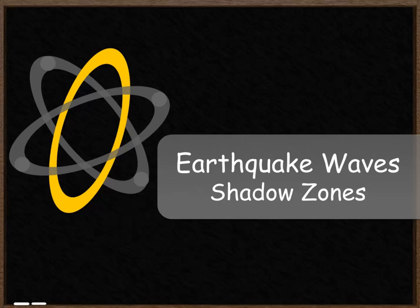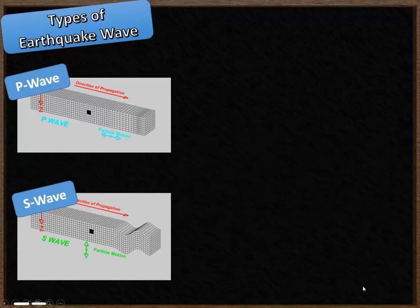Earthquake waves and shadow zones. There are two types of earthquake wave: a P wave, or primary wave, and an S wave, the secondary wave. Both types of earthquake wave are created during an earthquake.